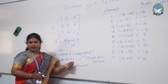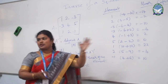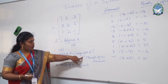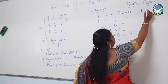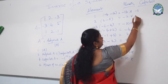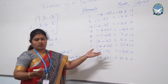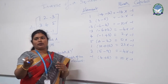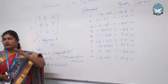We have now calculated the minor of each element. The next step is to calculate the cofactor using the formula: cofactor equals minus 1 to the power of i plus j, multiplied by the minor of the element. We already have the minors; we now multiply each by minus 1 raised to the power i plus j, where i and j are the row and column of that element. This is the easiest way to solve this.